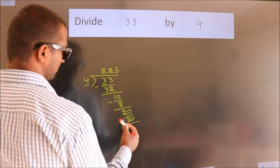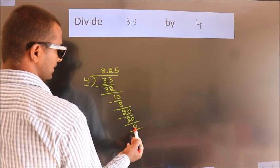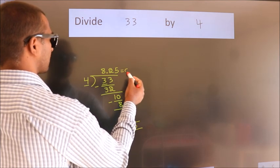Now we subtract, we get 0. We got remainder 0, so this is our quotient.